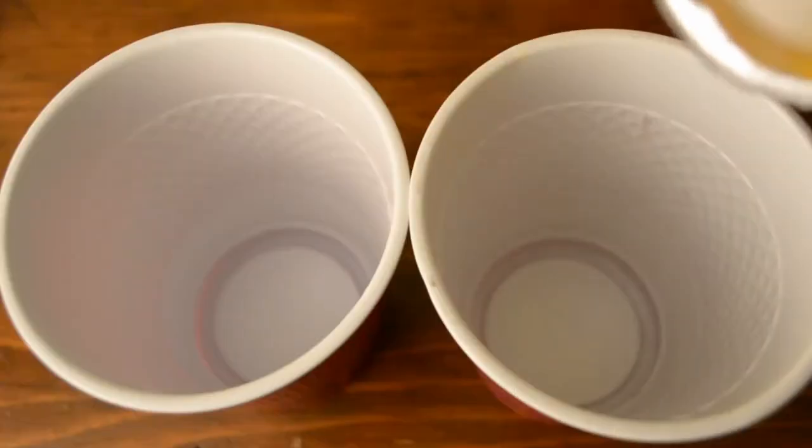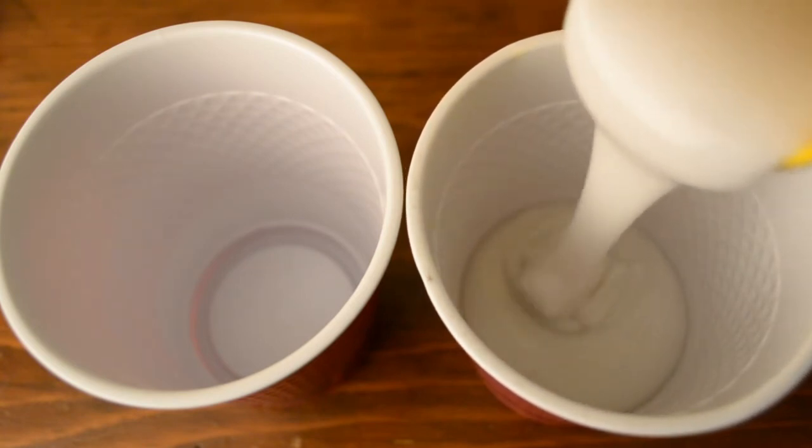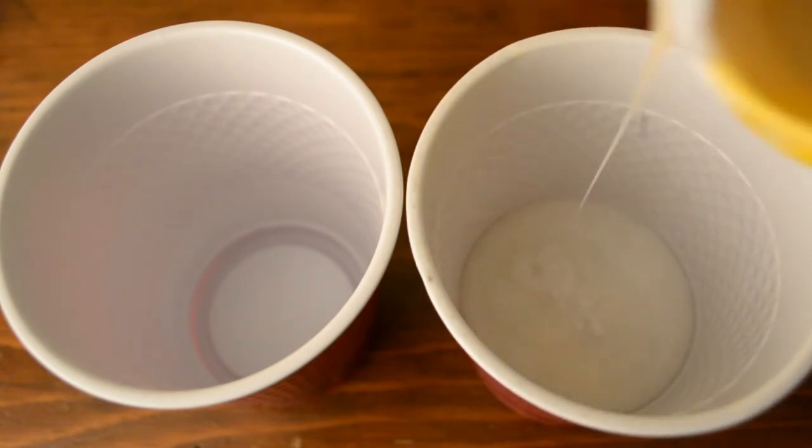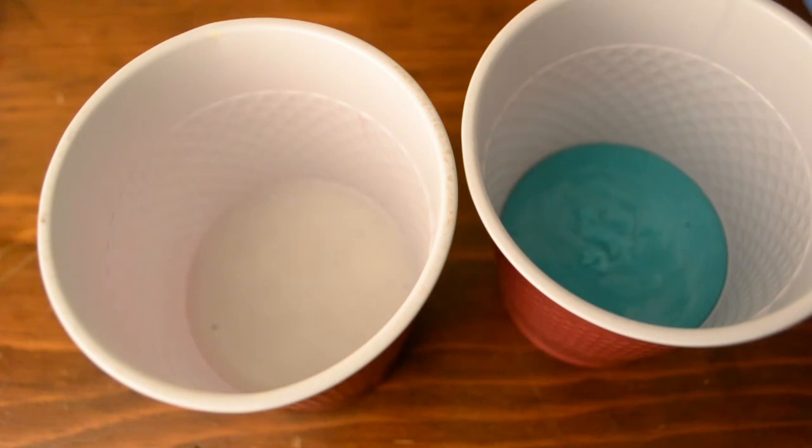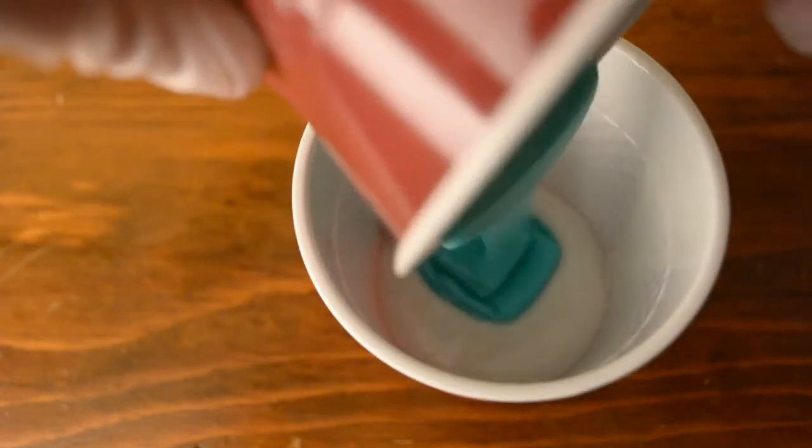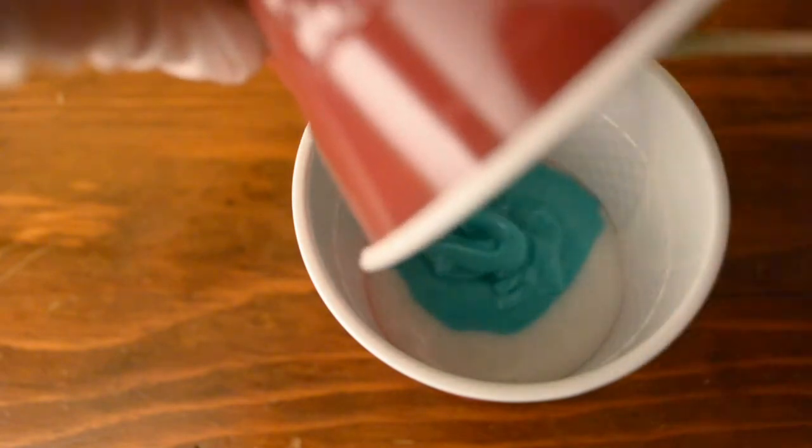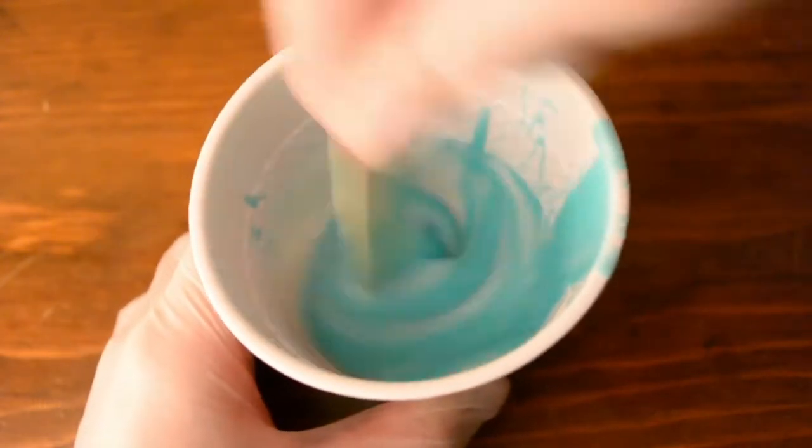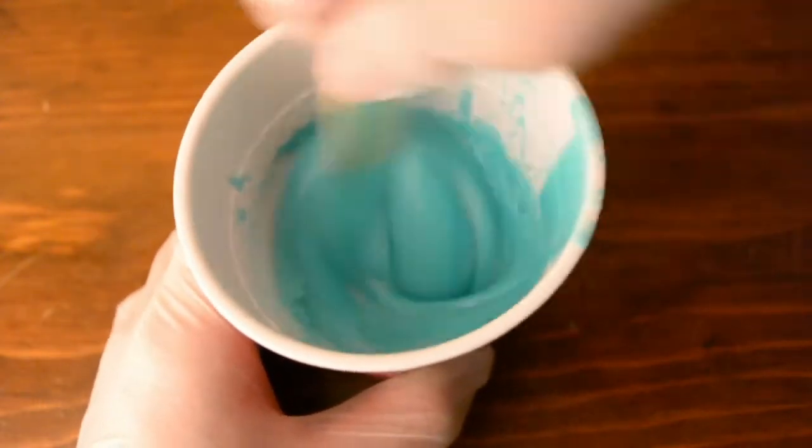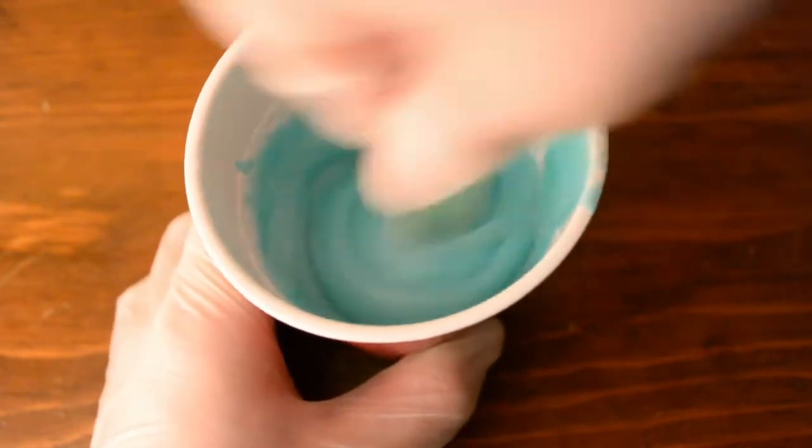I began making the molds by pouring part A of my mold maker into a solo cup. I poured part B into a separate solo cup. I eyeballed the measurements because this mold has a 1 to 1 ratio and is fairly easy to use. I could then mix both parts together.